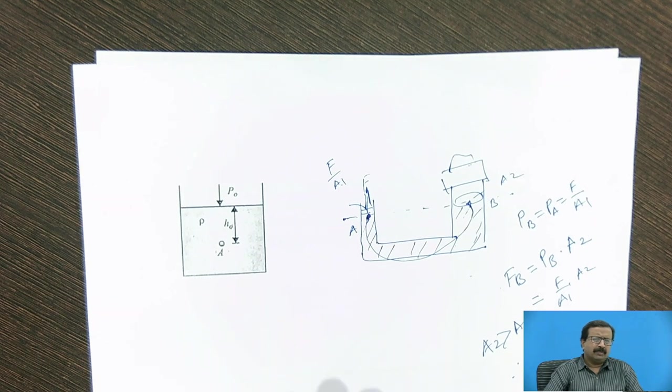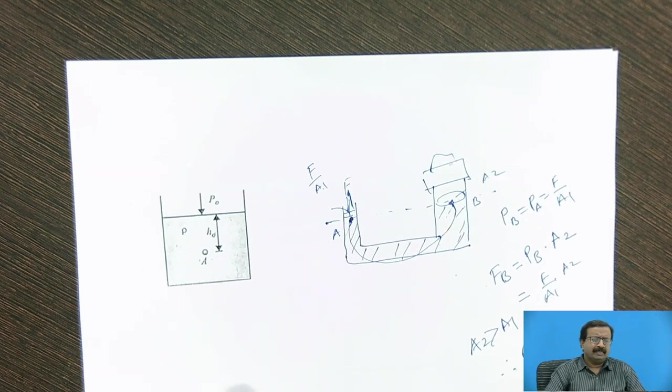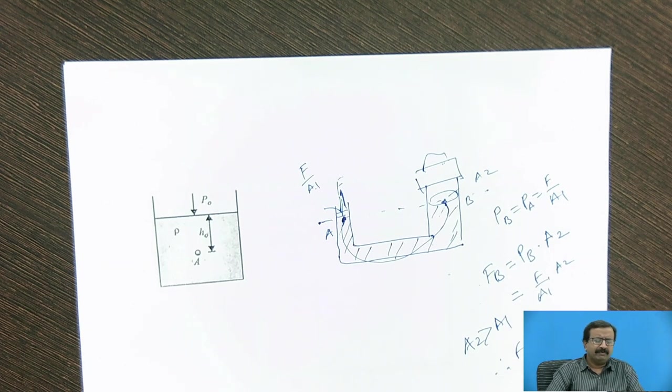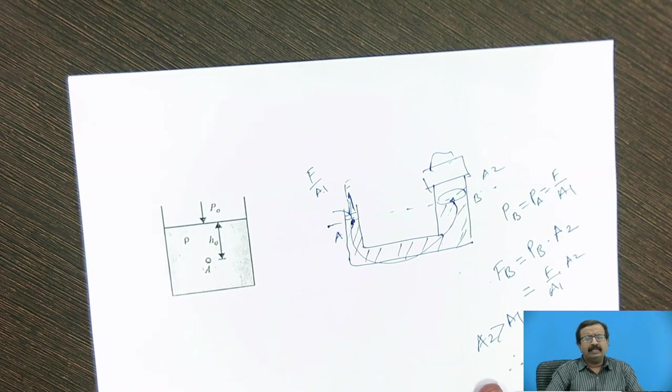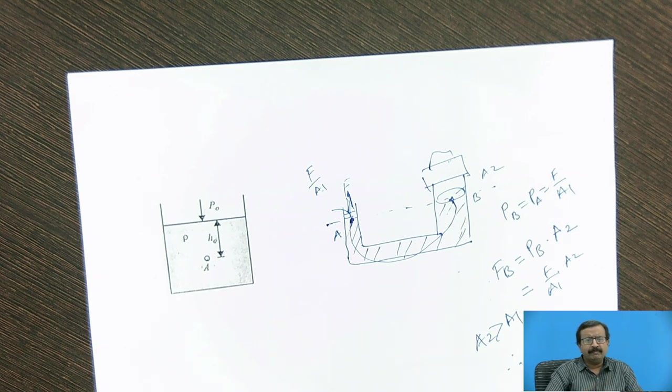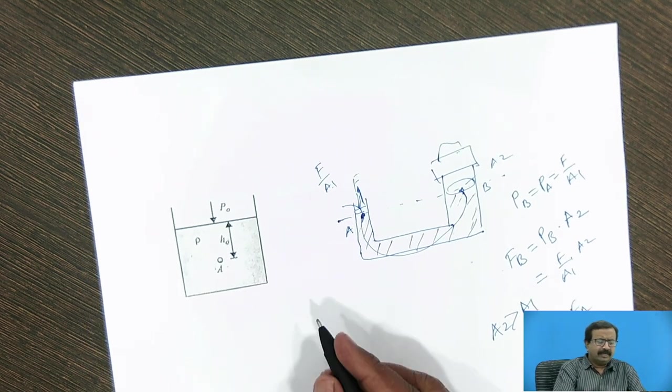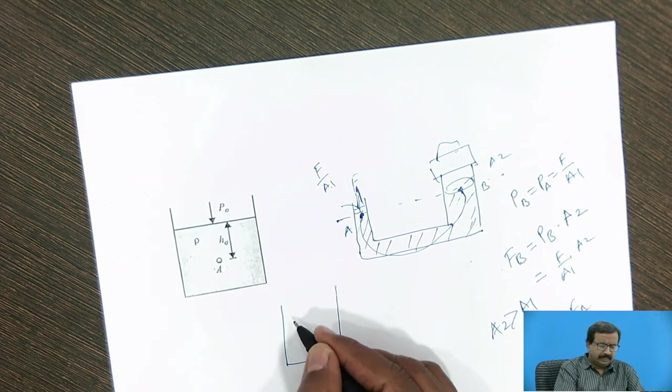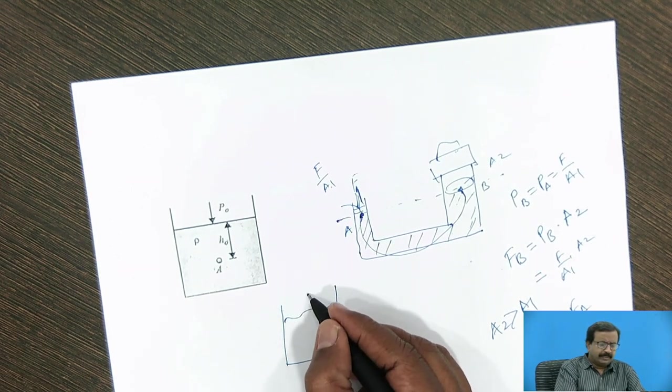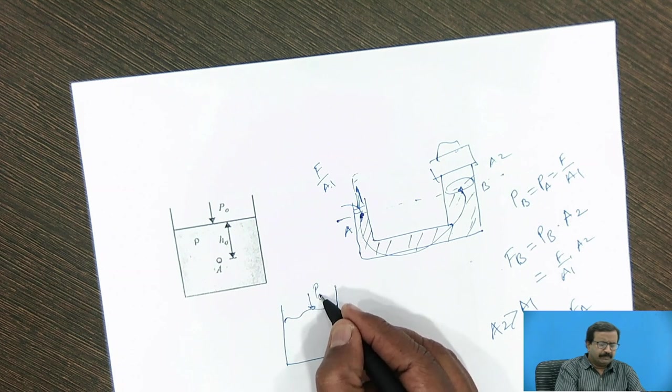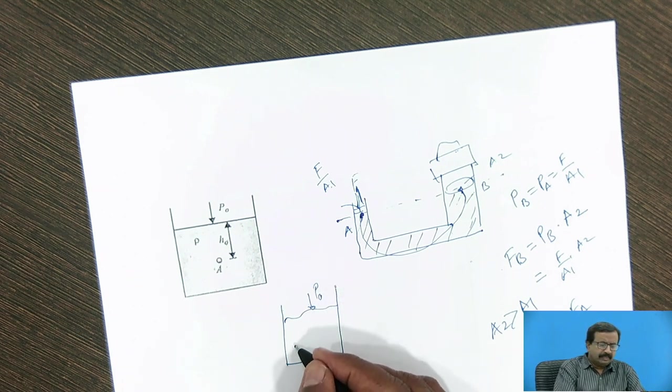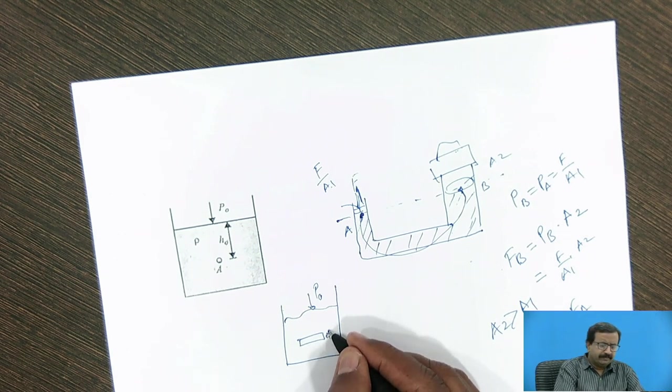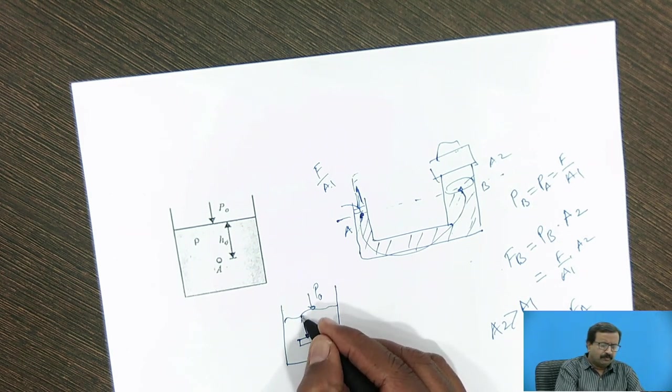Now, first of all, before going to see various applications of Pascal's law, one more thing I want to make it clear that whenever we want to evaluate exactly how the pressure is calculated as we move deep inside the liquid, let us see. Suppose I take this as a container in which, say at this suppose there is an atmospheric pressure I denote by P₀, then I take some element here whose width is say dy and at a height of y.